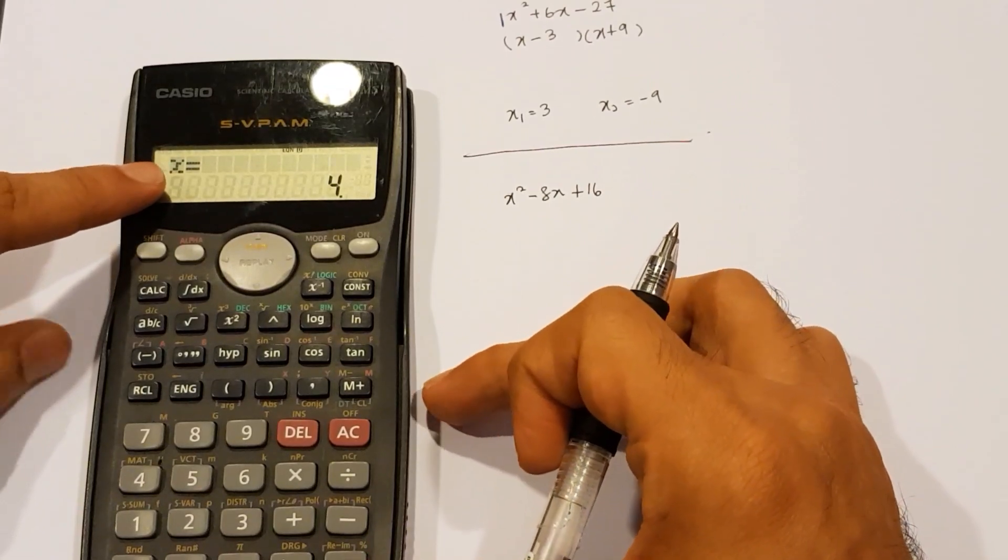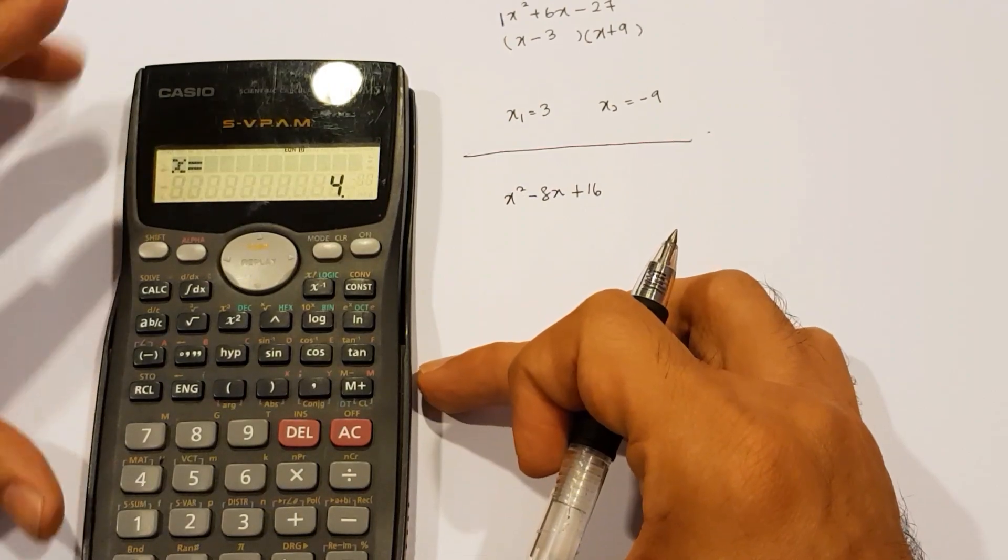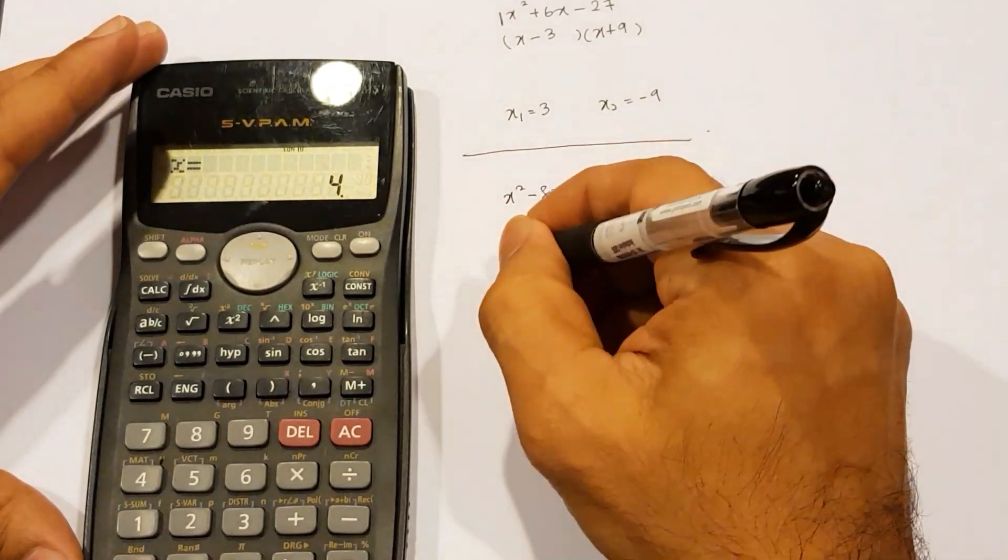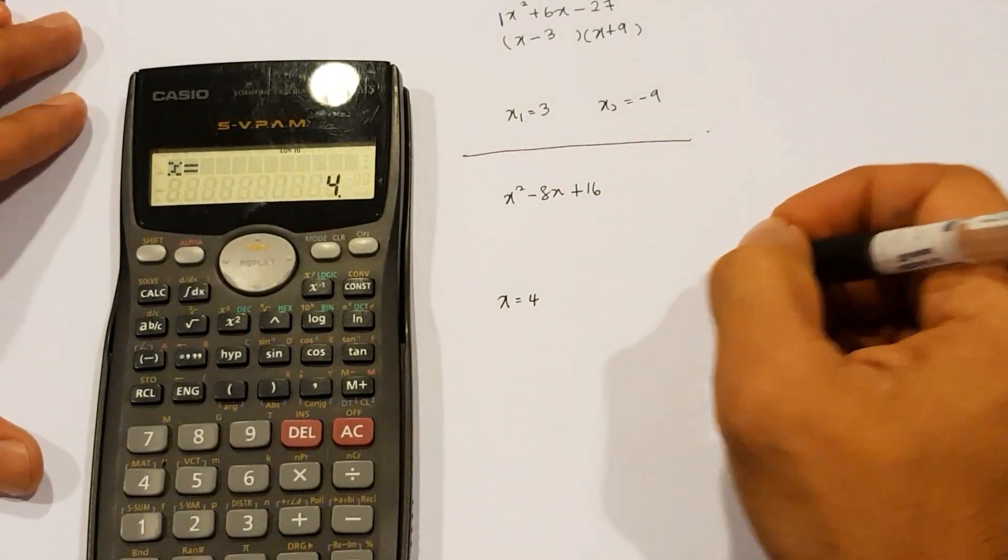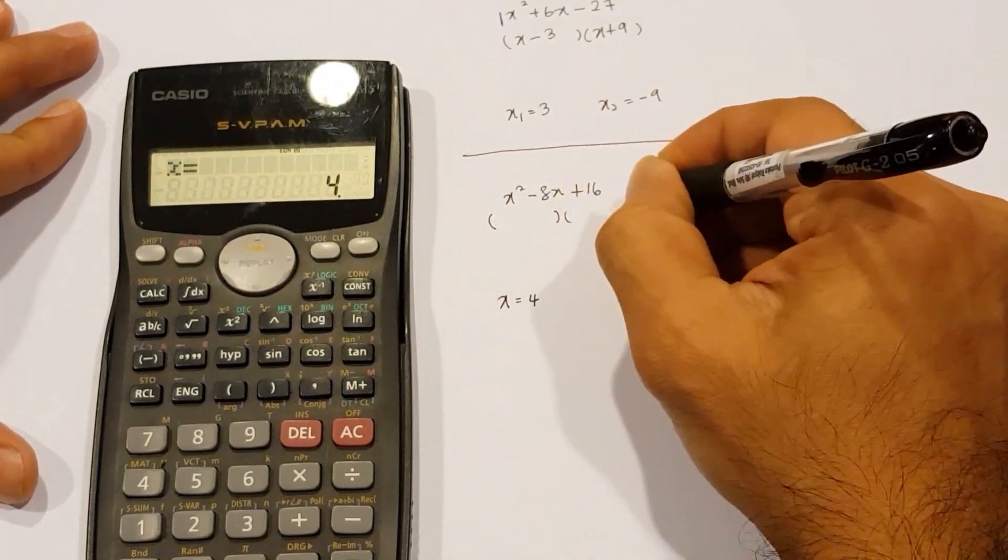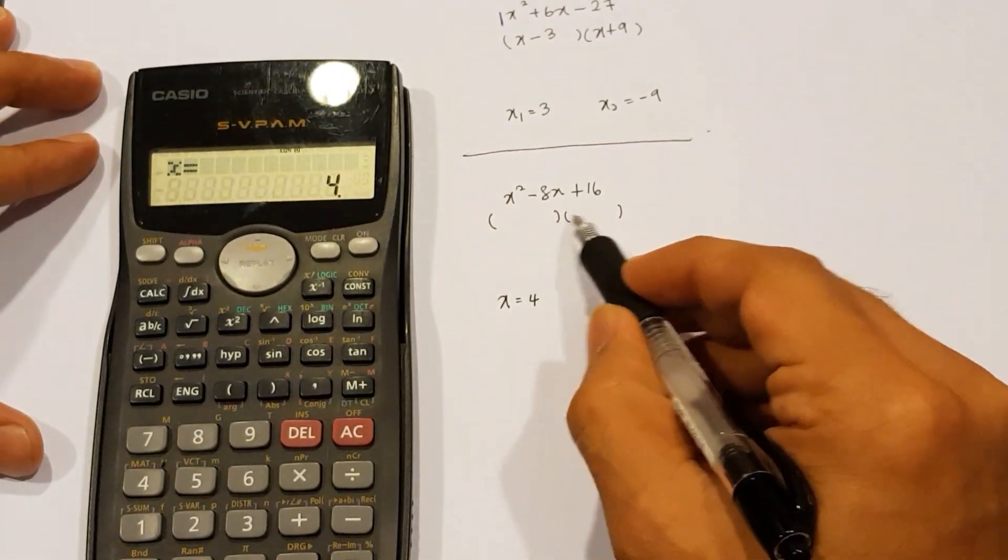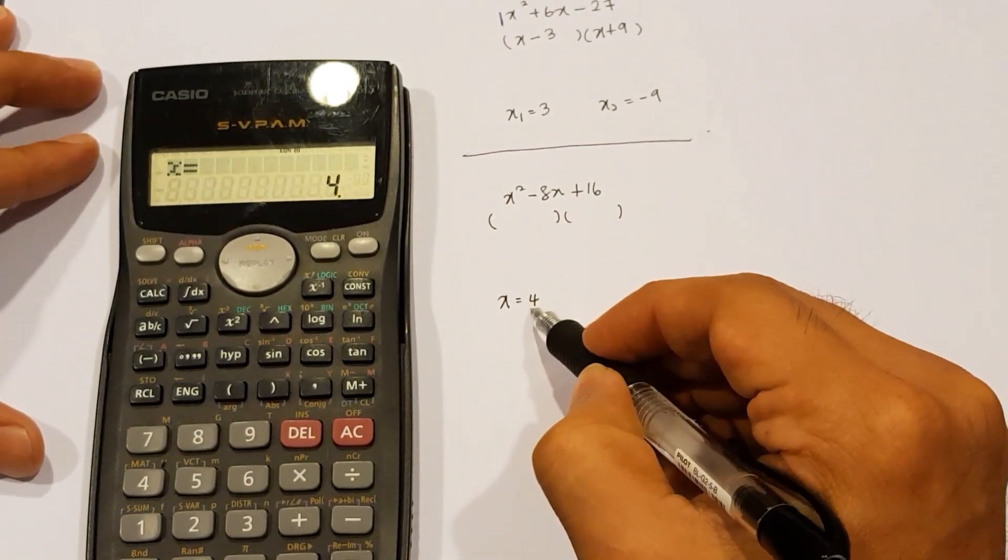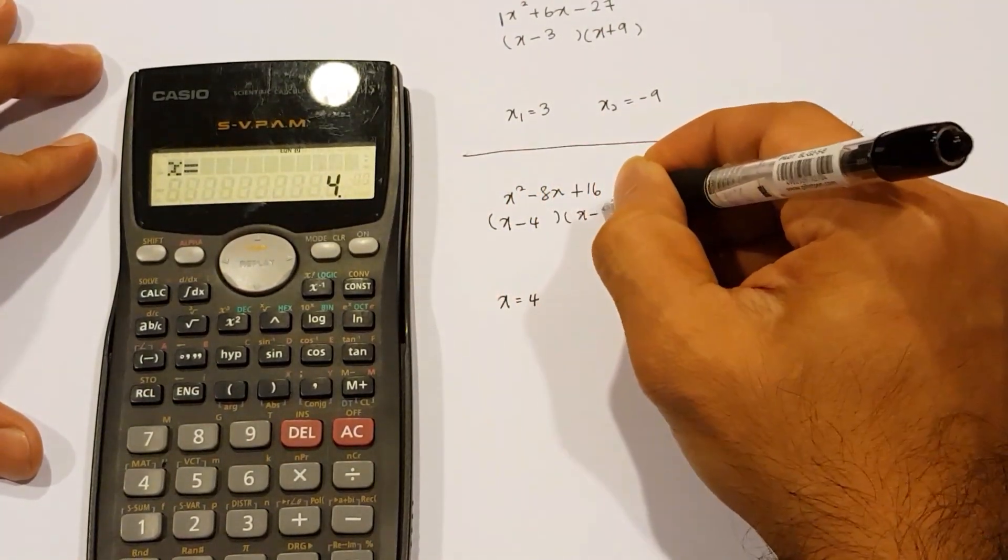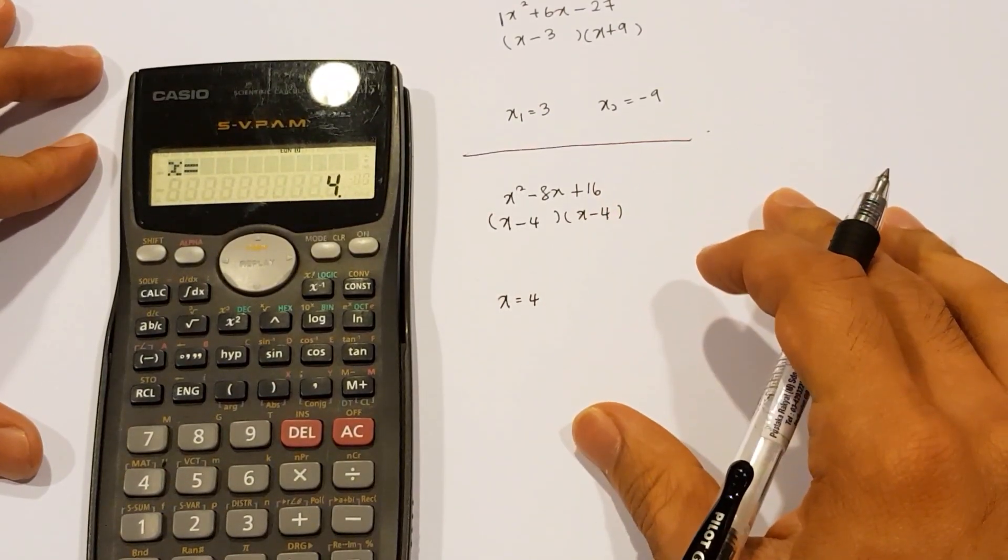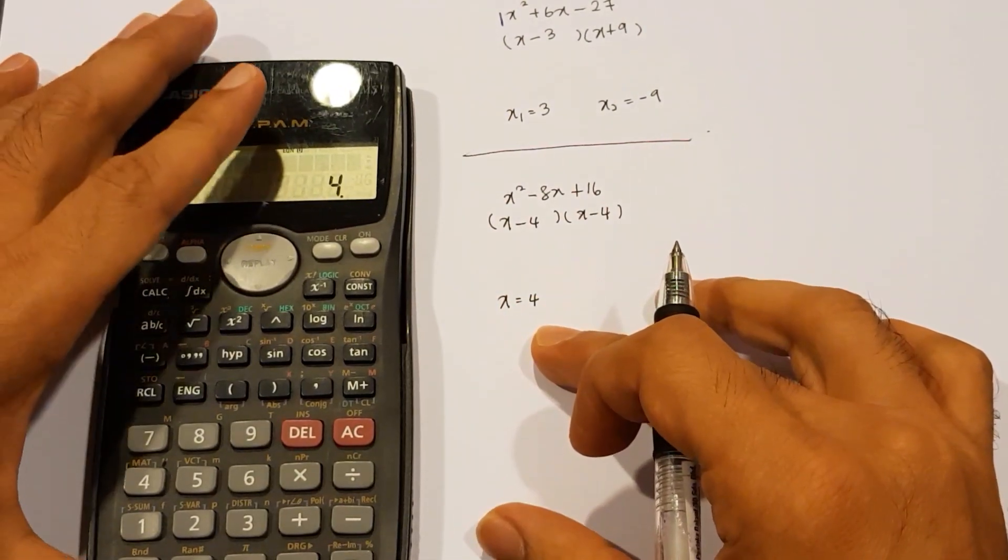Now notice this time, we only have the display showing us x equal to 4. Not x1, not x2. What this means is that we have got two values actually, and they are both the same. When we factorize, we expect to get two factors, two brackets. But because we have got x equal to 4, this means that both numbers in these two brackets will be the same. In the bracket, I'm going to write x minus 4, and that is also x minus 4. Two same brackets, because you've got equal roots or equal answers.